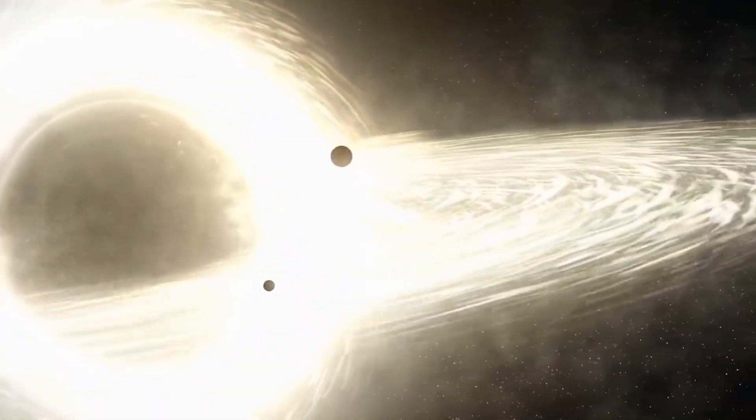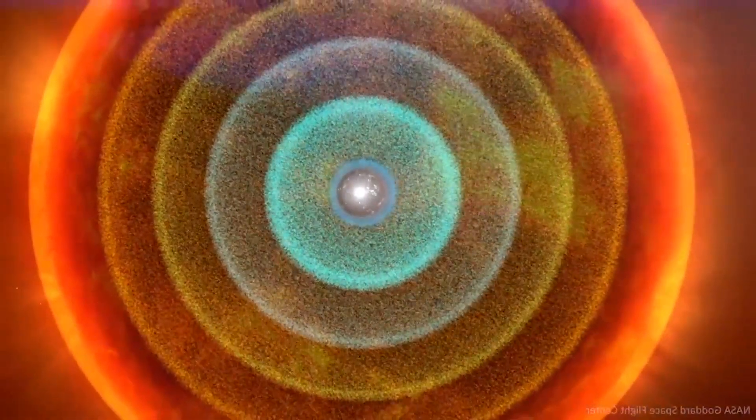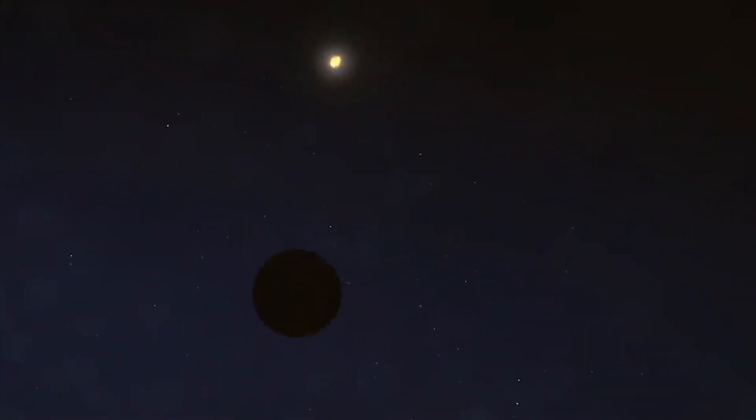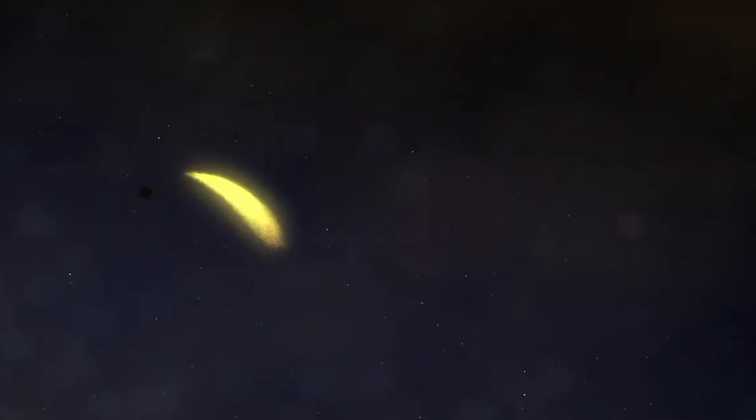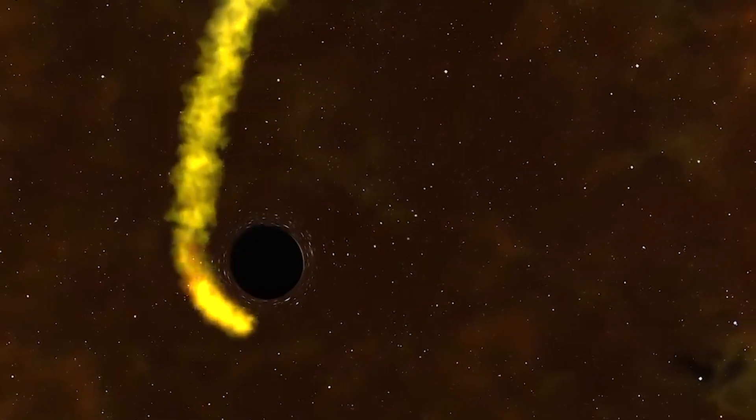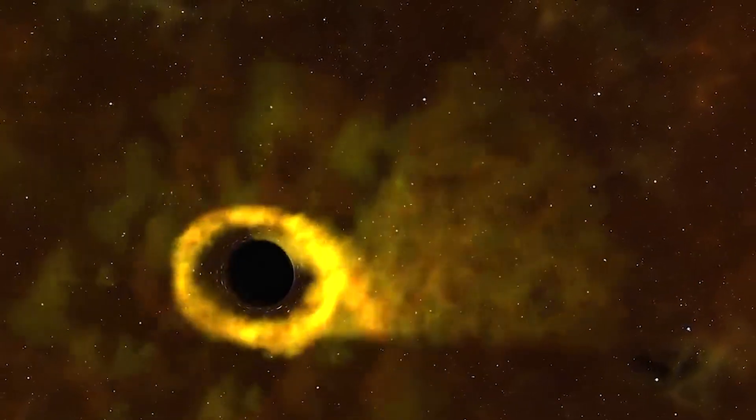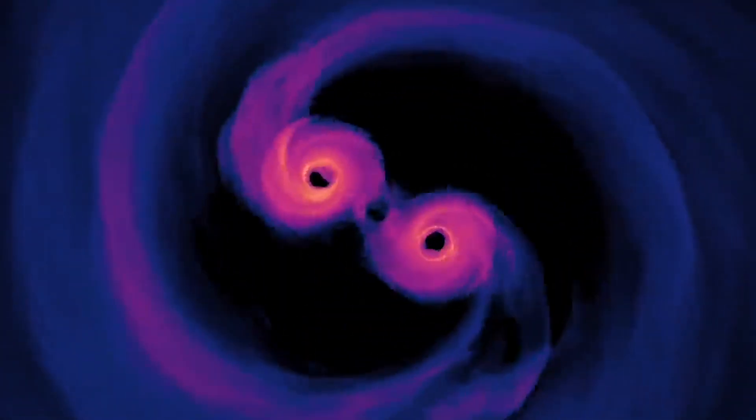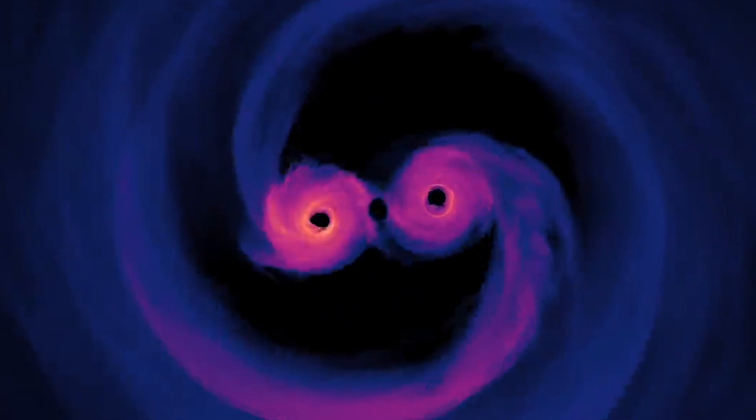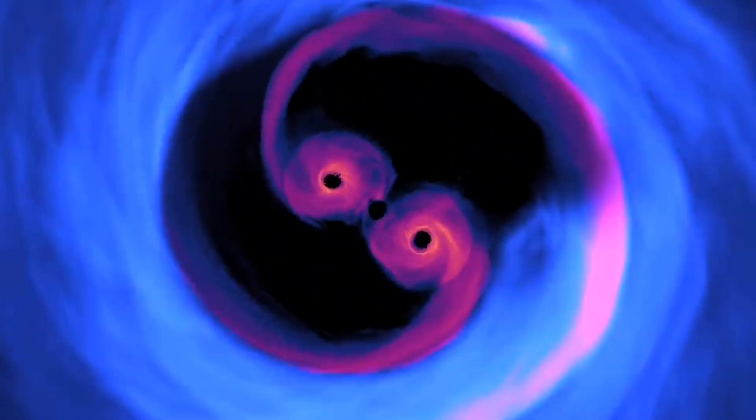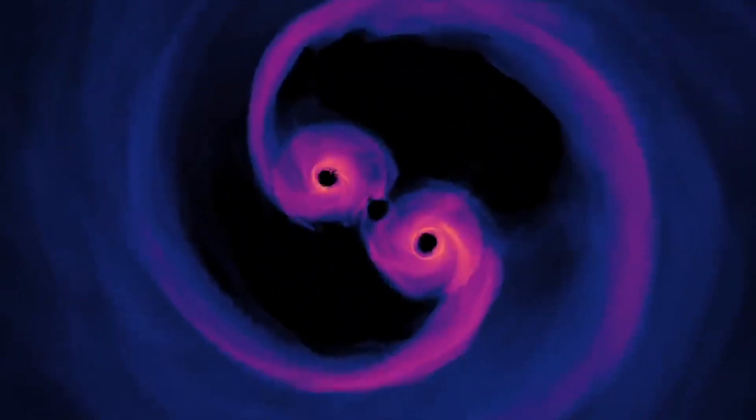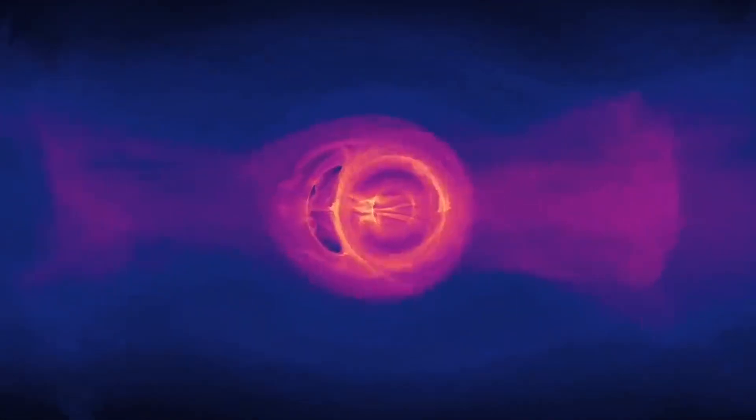Another way which black holes can destroy space is through the decay of orbits. As the black hole gets larger, it drags more and more matter into itself. This means that any stars or planets orbiting it would eventually be pulled in as well. When this happens, those objects lose energy and begin to orbit the black hole closer and closer until they finally fall inside of it.